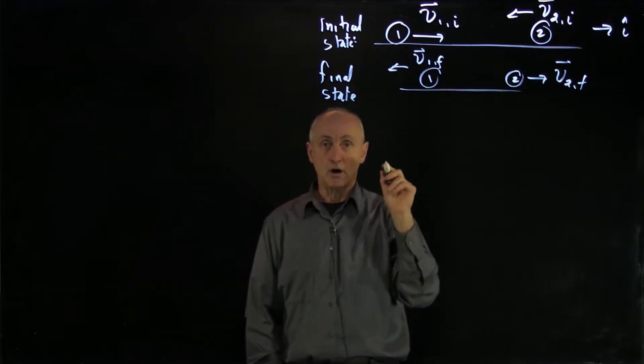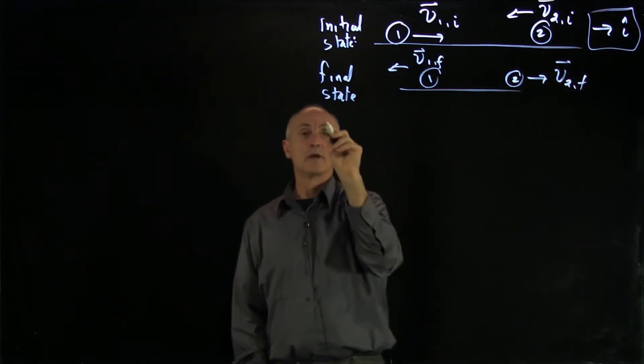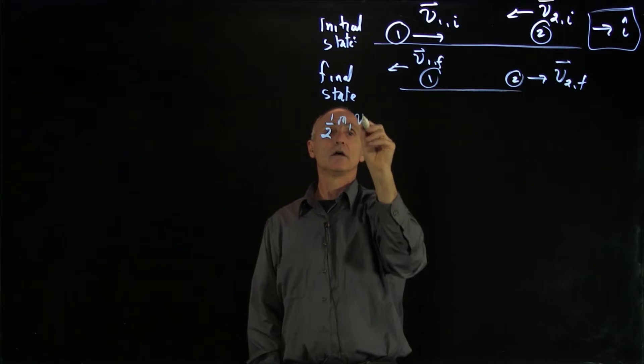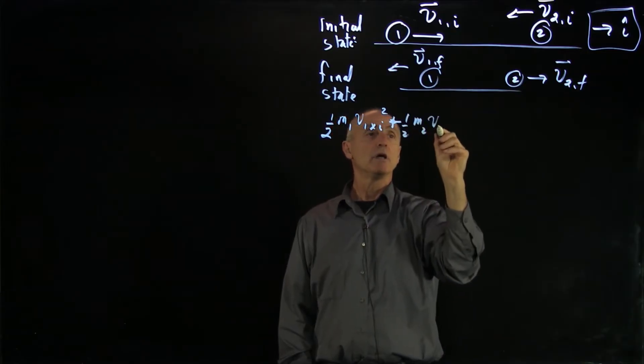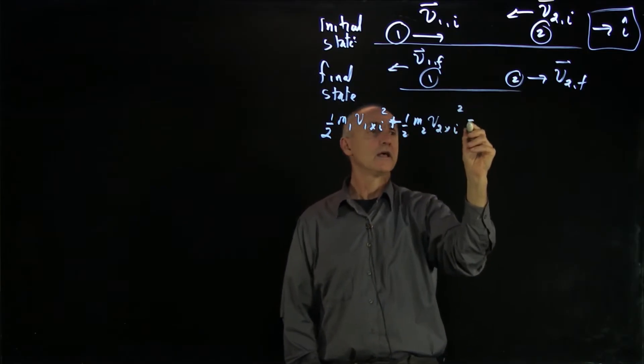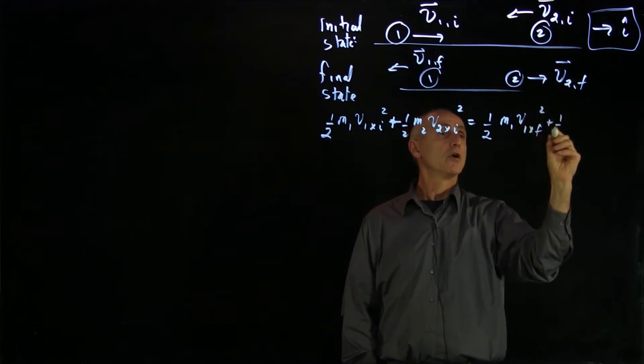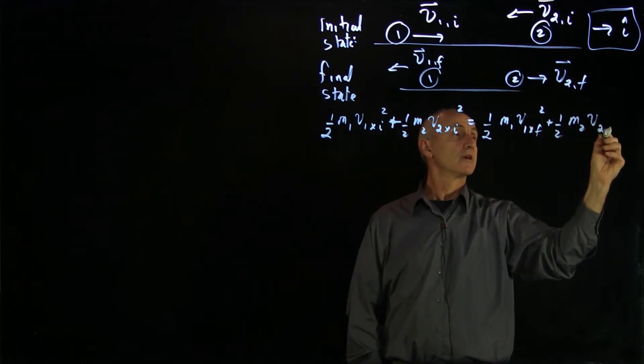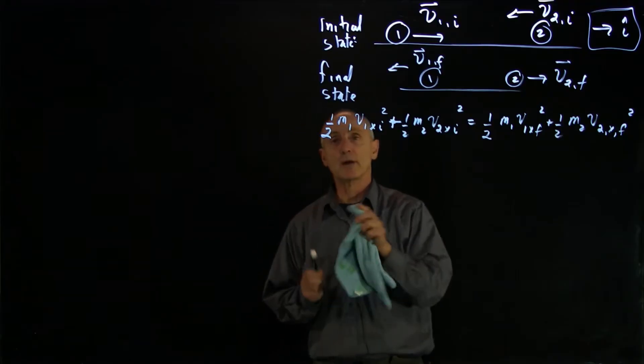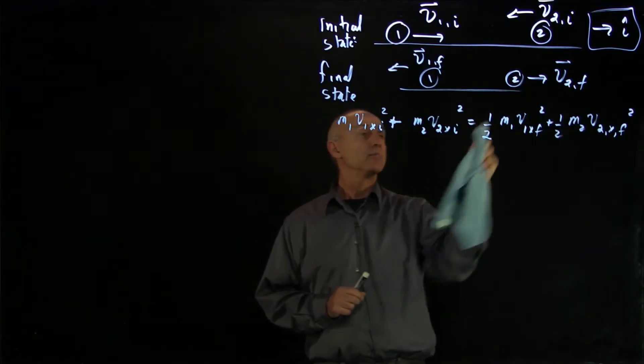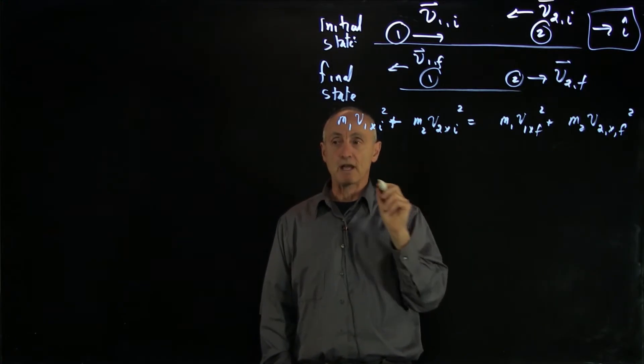Now, because energy and momentum are constant, let's write down our two equations. And I'm going to write them down in terms of components. So we have 1/2 m1 v1x initial squared plus 1/2 m2 v2x initial squared equals 1/2 m1 v1x final squared plus 1/2 m2 v2x final squared. Now we're going to do some algebraic manipulations here. So the first thing I'm going to do is just eliminate these halves because it's not necessary and I don't want to rewrite this equation.